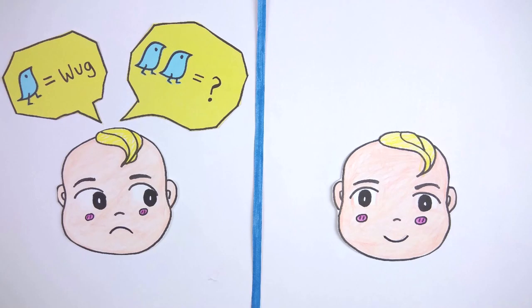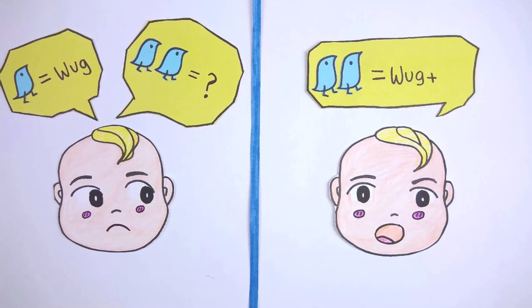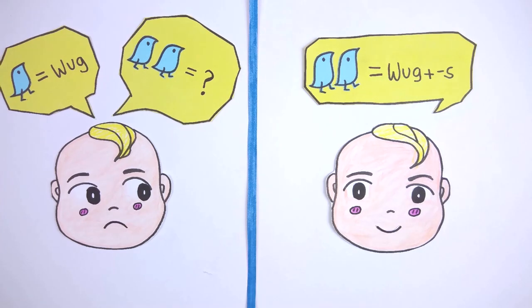If children learn the morpheme by rule extraction, when they encounter a nonce word, they may still be able to generalize the rule to them and use the plural form WUGS.